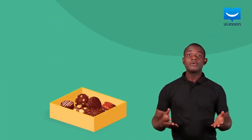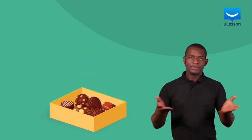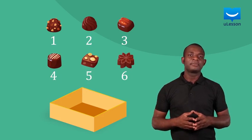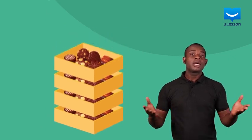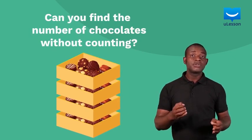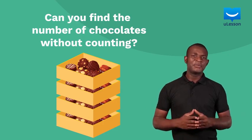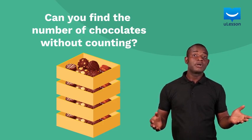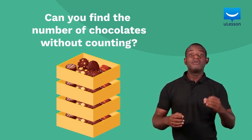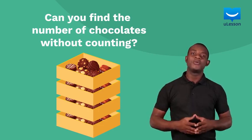Imagine you have one box of chocolates and you want to know the total number of chocolates in the box. You can do this by counting them. But what if you had four boxes of chocolates? Can you find out the number of chocolates you have without counting? This would be impossible, because you cannot add the number of chocolates in all the boxes since addition is not possible in that world.